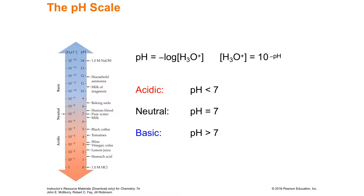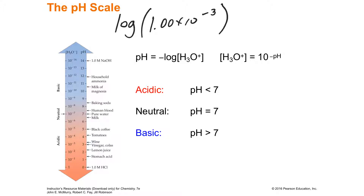A logarithm in base 10 — your LOG button — is asking: what do I have to raise 10 to in order to get the answer? So, what is the log of 10 to the negative 3? Well, I have to raise 10 to the negative 3 to get 10 to the negative 3. So the log base 10 of something raised to the negative 3 power is negative 3.